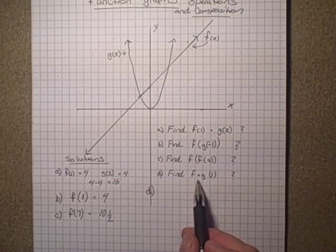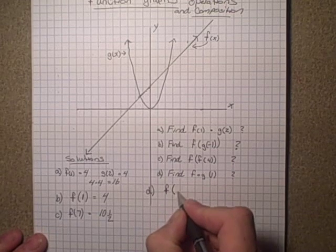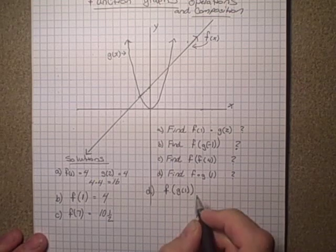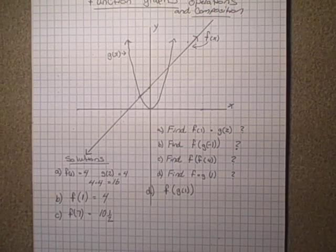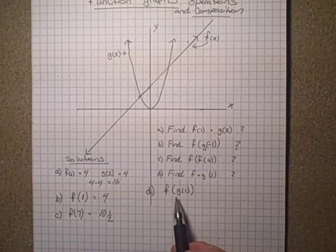That means you have to find g(1) first and then compose it into f. So that would be written in the same form like this: g(1) is inside that bracket before the f(x).